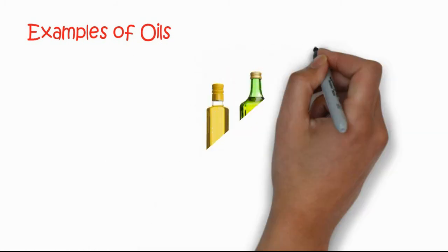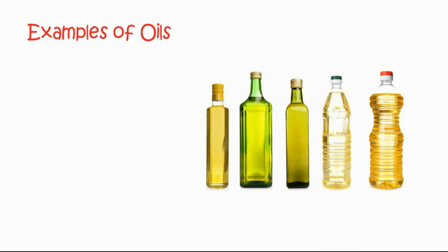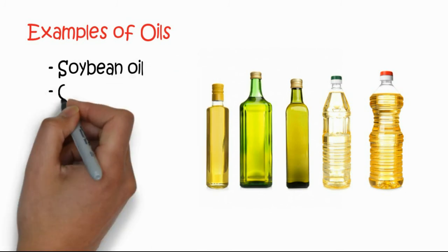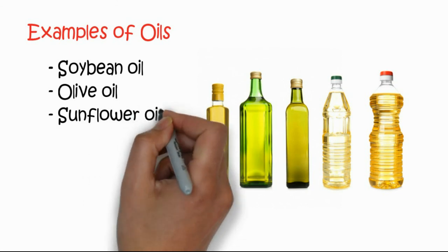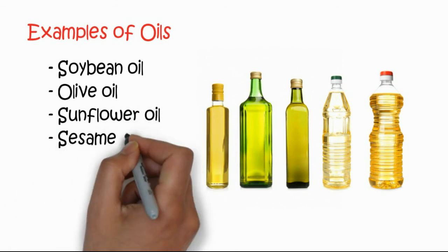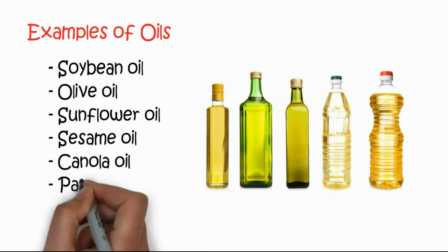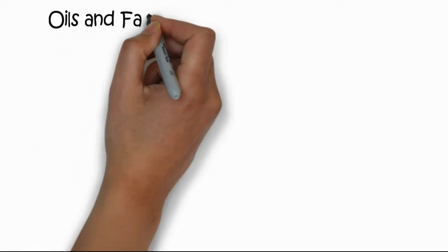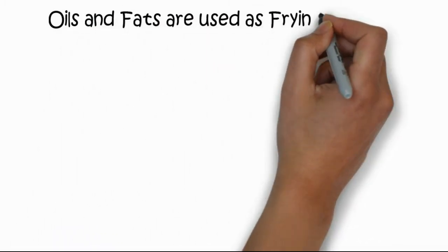Here are examples of oils. In this picture you can see oils present in different bottles. The examples include soybean oil, olive oil, sunflower oil, sesame oil, canola oil, and palm oil, along with other minor oils.